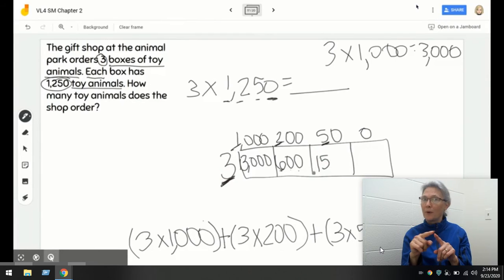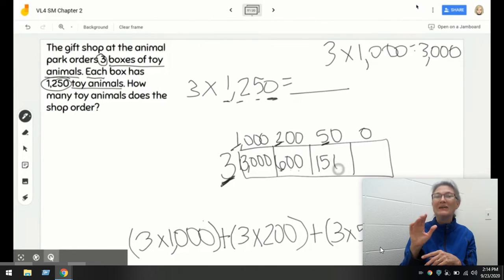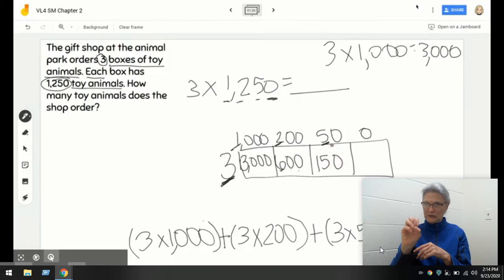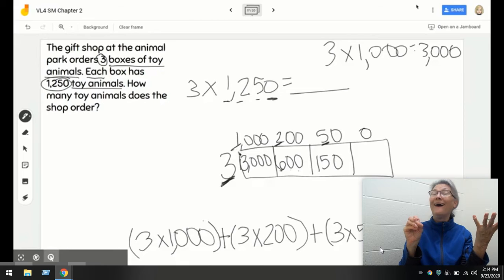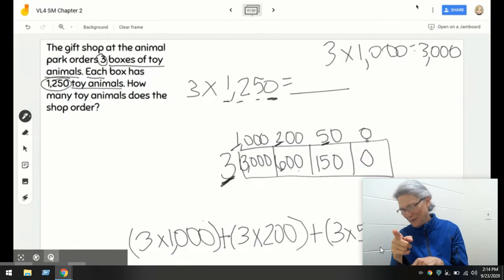But you guys, we didn't multiply just 3 times 5. We did 3 times 5 tens. So, let's go ahead and let's add in our zero. And last but not least, 3 times zero is zero. I couldn't trick you. Okay. It's zero. You're right.